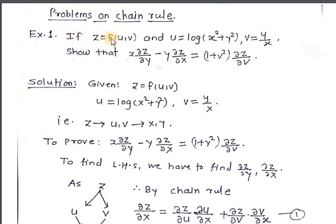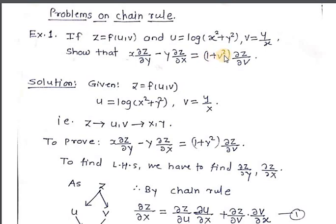If z is equal to function of u and v, and u is given as u equals log of x square plus y square, v is equal to y upon x, then show that x ∂z/∂y minus y ∂z/∂x is equal to 1 plus v square times ∂z/∂v. This is an example of partial derivative.